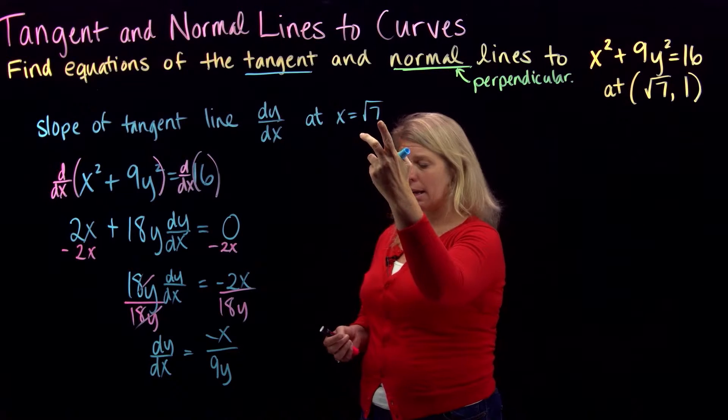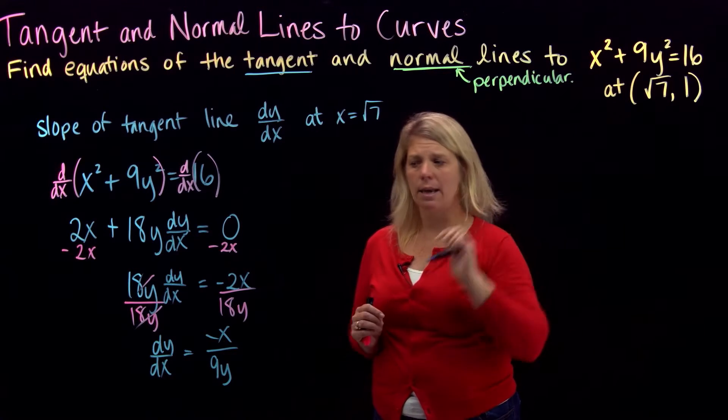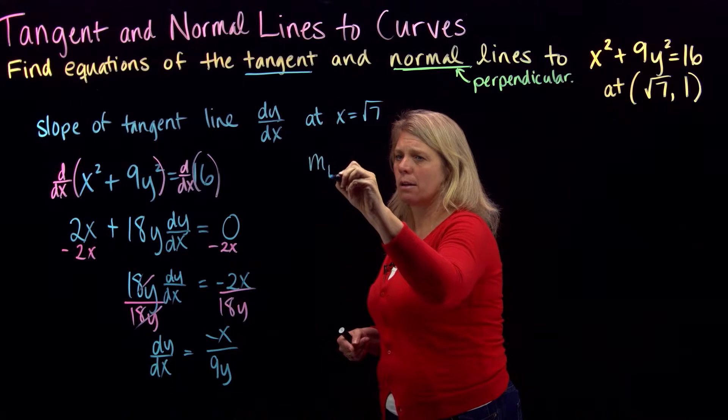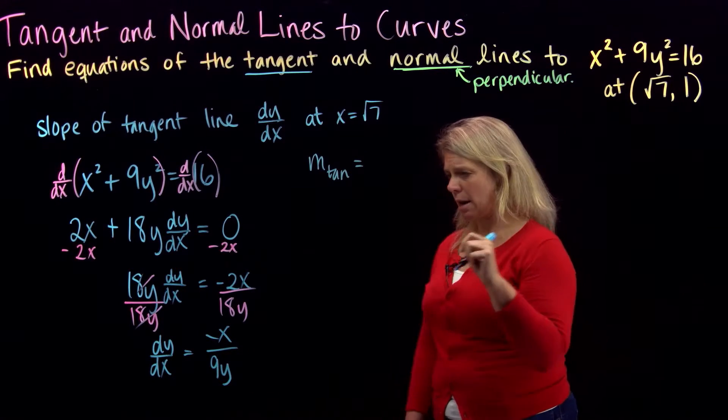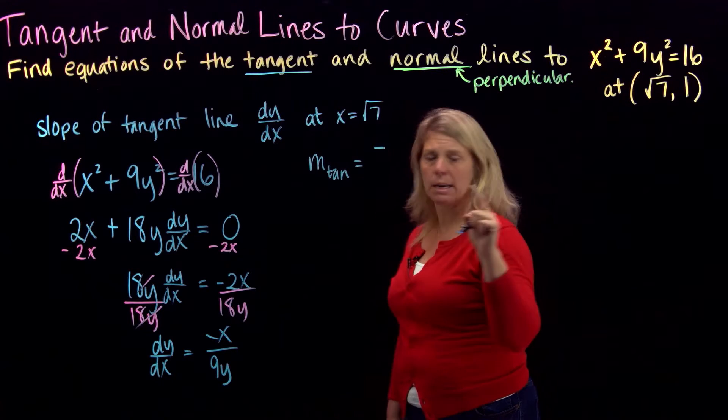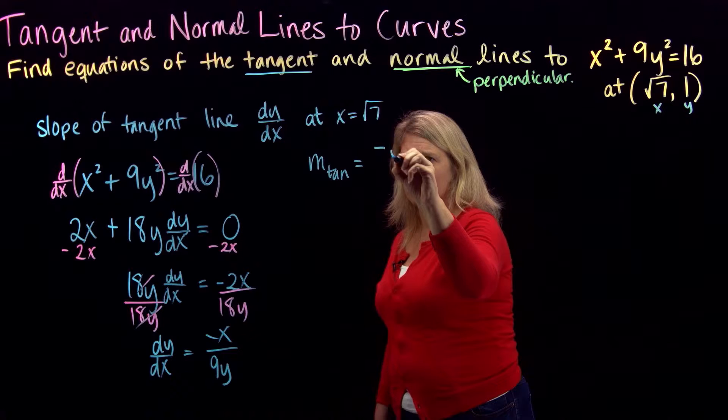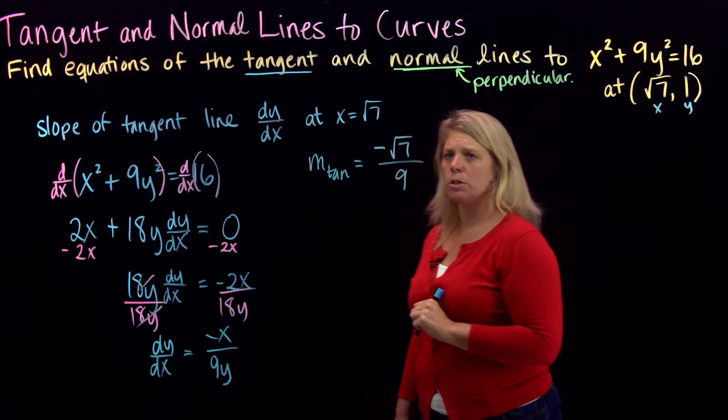So here, instead of just plugging in x equals square root of 7, we'll also need to plug in the y coordinate of the point, which they gave us as well. So our slope of our tangent line is going to be our dy dx evaluated at our point. So make sure we put the right number in place of x and y here. So I'll have negative square root of 7 over 9 times 1 will just be 9.